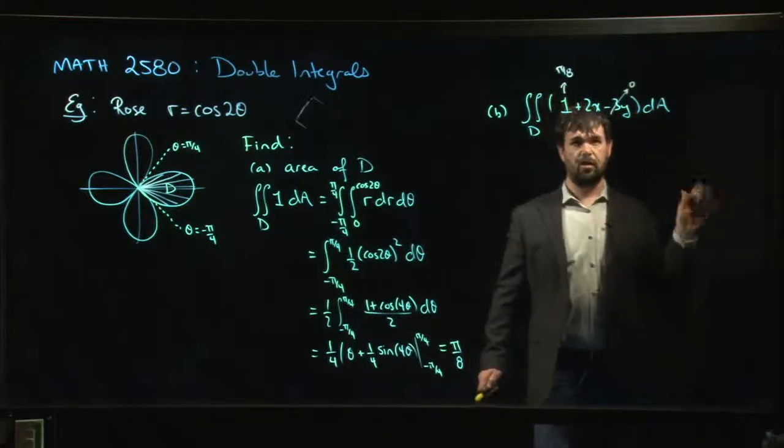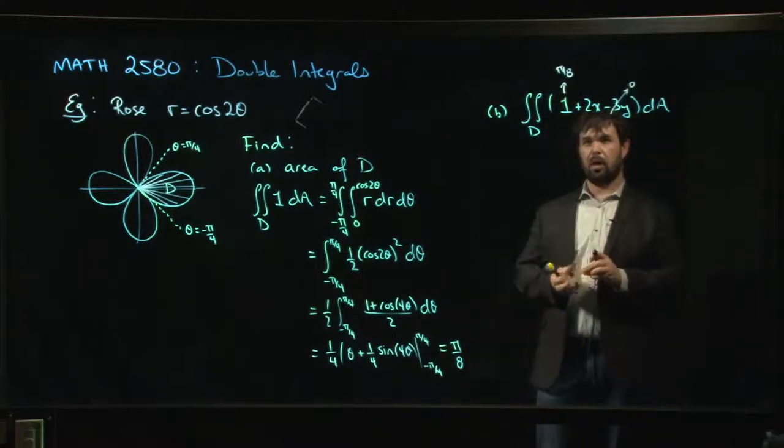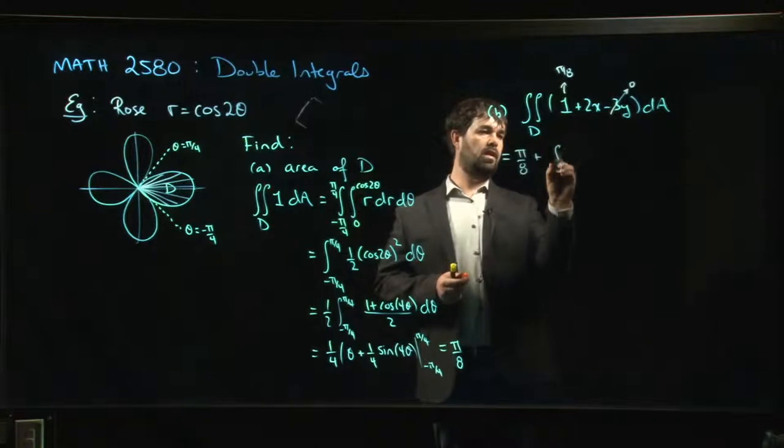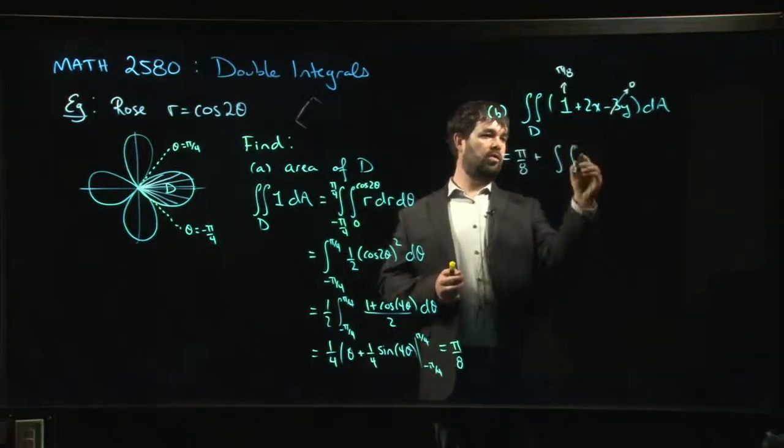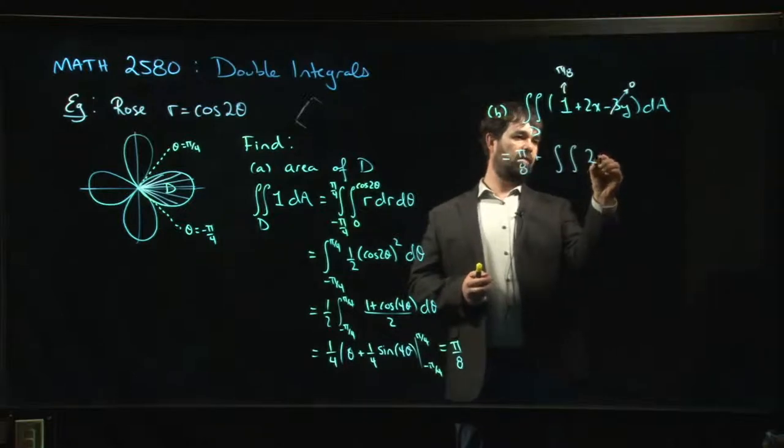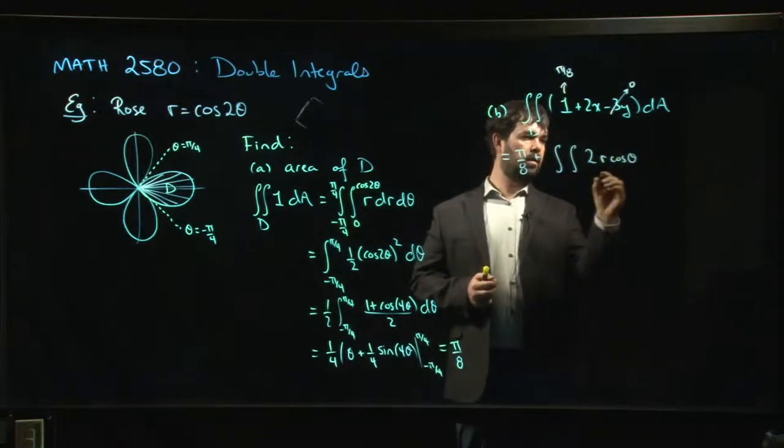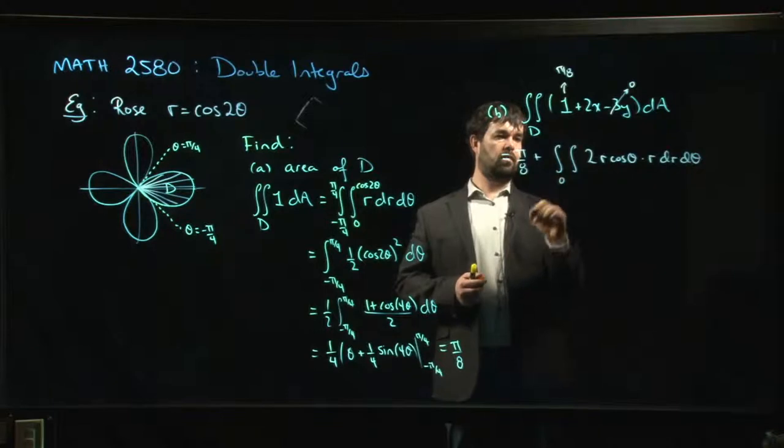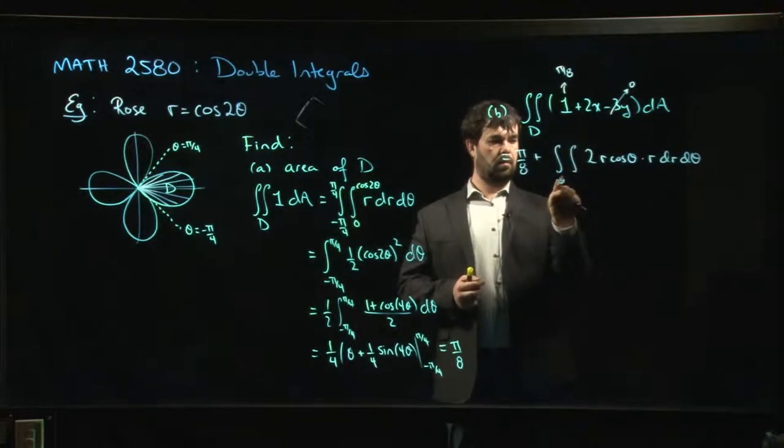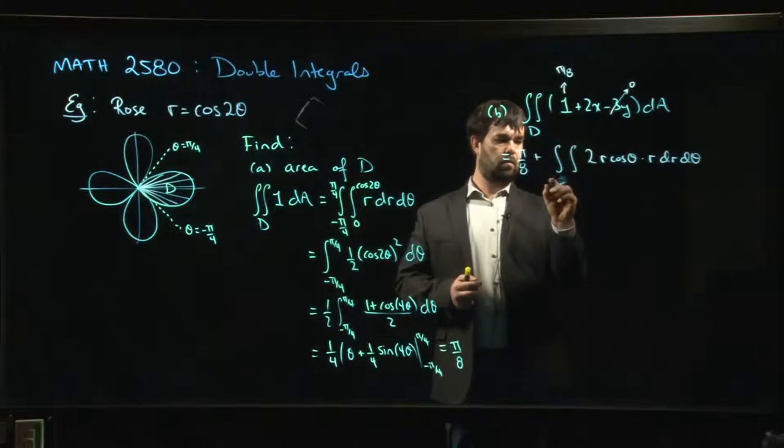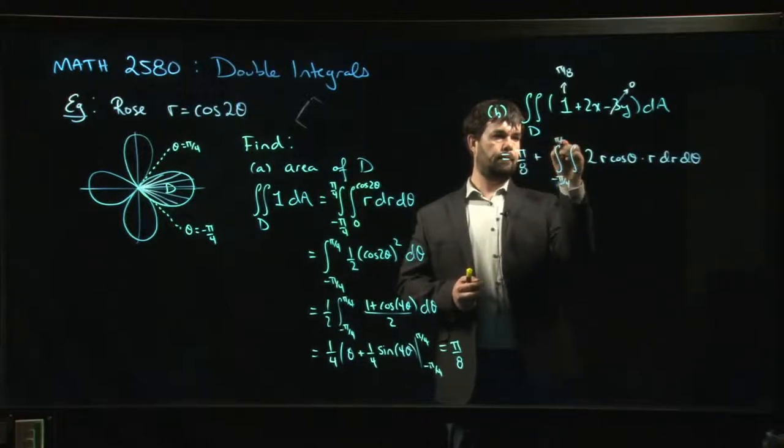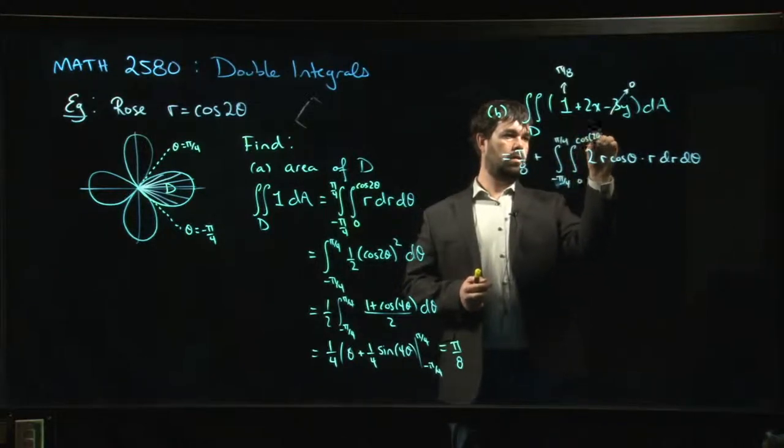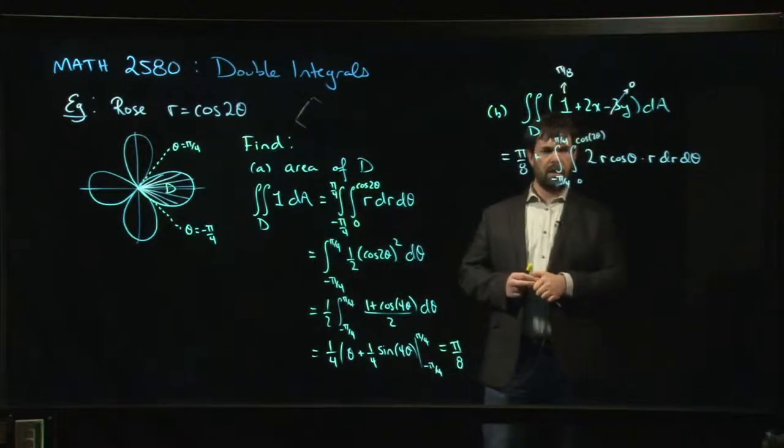We know that this doesn't contribute by symmetry. So the only thing that we really need to work out is—we know that this is going to be pi over 8 plus the integral over D of 2x. And 2x is what? x is r cos theta, and then we have r dr d theta. Minus pi over 4 to pi over 4, zero to cos 2 theta.